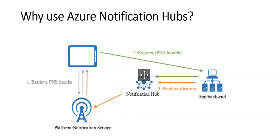Notification Hubs is cross-platform — it supports all major push platforms including iOS, Android, and Windows — and provides a common interface to push to all platforms in platform-specific or platform-independent formats. It also supports cross-backends, whether cloud or on-premises, and you can use .NET, Java, Python, and more.